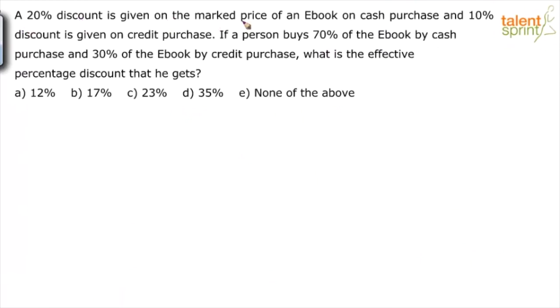A 20% discount is given on the marked price of an e-book on cash purchase and 10% discount is given on credit purchase. If a person buys 70% of the e-book by cash purchase and 30% of the e-book by credit purchase, what is the effective percentage discount that he gets? Options are 12%, 17%, 23%, 35%, or none of the above.